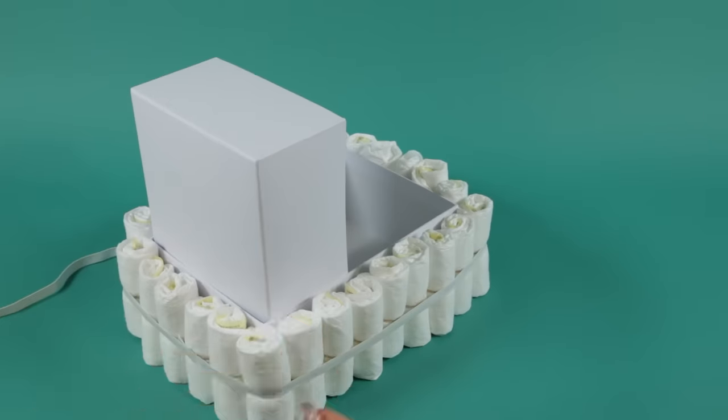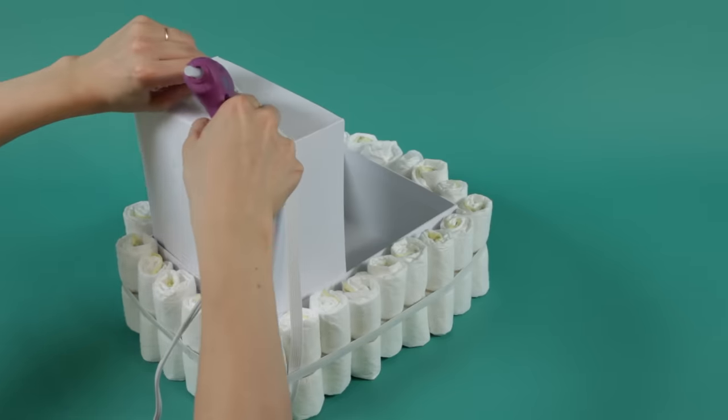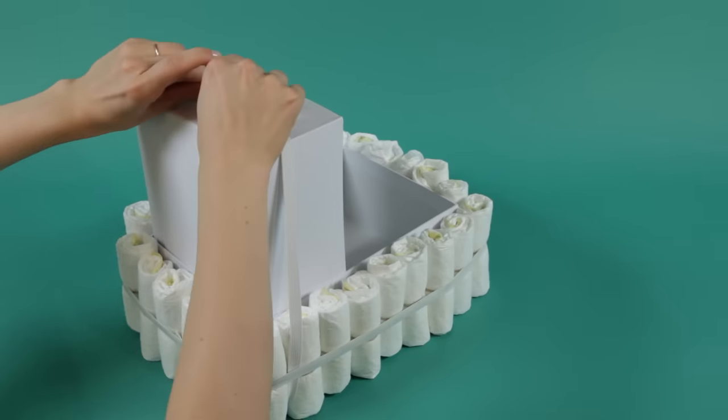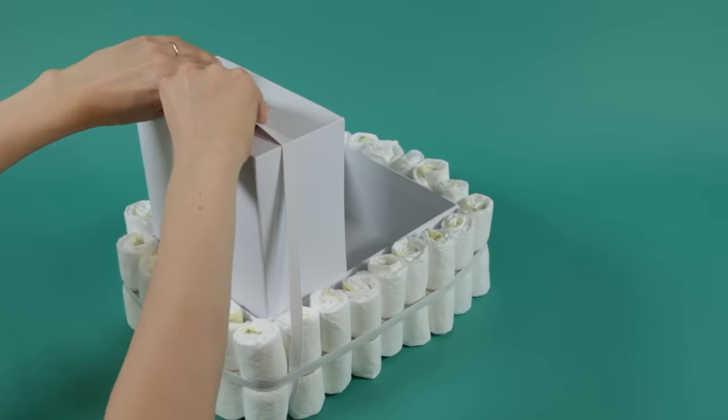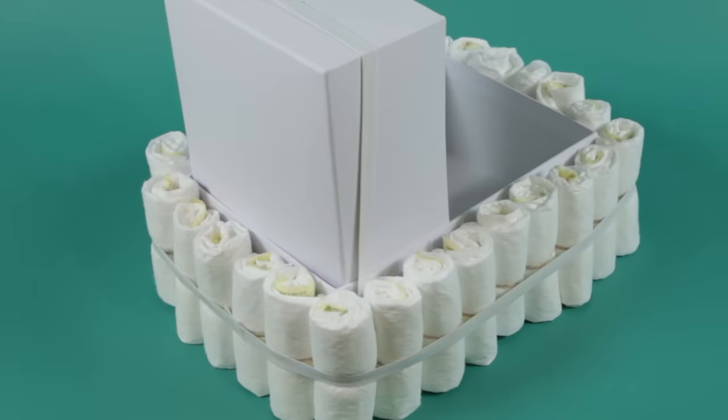To form the canopy of the stroller, wrap another band of elastic around the vertical box. The elastic from the top box will be protruding on both sides. Tuck the elastic in between two vertical diapers. Do the same on the other side of the box.